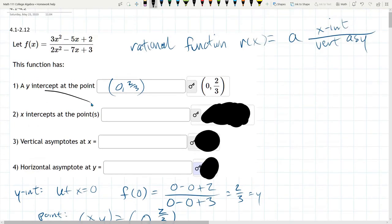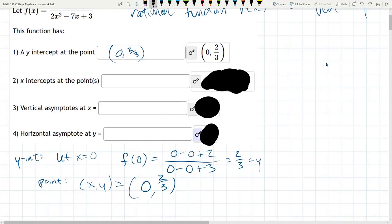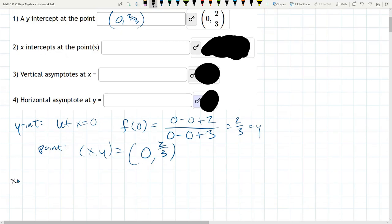Next up, x-intercepts. And they're in the numerator. But let's say that you don't remember that. How do we find x-intercepts? Similar to y-intercepts, you're on the x-axis when your y is zero. That's when you're on your x-axis. So here we're setting y equal to zero. Of course, y is f of x.